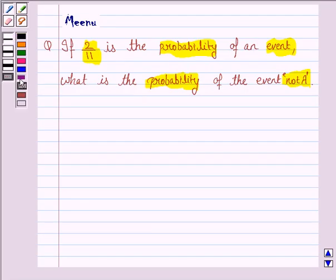So let us first understand the key idea behind this question. If the probability of an event A is P, then the probability of the event not A, or we can say probability of A bar, is equal to 1 minus P. This will be the key idea.